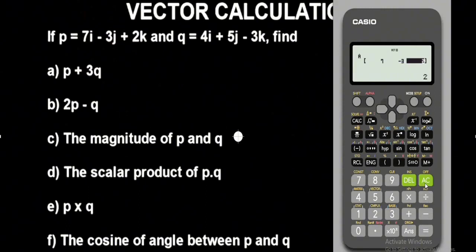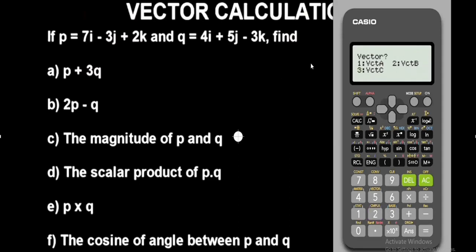Now I need to go back and input the values for vector Q, which will be vector B on this calculator. Press Shift then button 5 — you will see 'vector' on top of it. Press it, then select Data to input the values for vector Q. Press Data, then go for vector B. Press 2 for vector B; the dimension is still three-dimensional, so press 1. For 4i press 4, for 5j press 5, and for minus 3k press minus 3. That's it — we have finished inputting all the values.